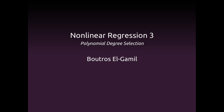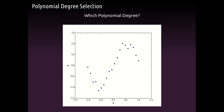If we have a dataset as shown in this plot, we have a set of observations that definitely have a nonlinear relationship. The question is always: which polynomial function should we use, or which degree of complexity or simplicity should we use in our function?